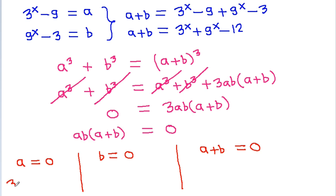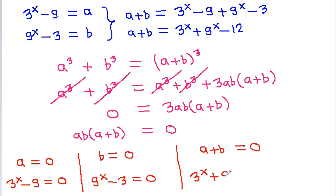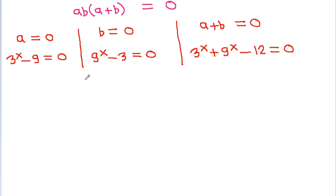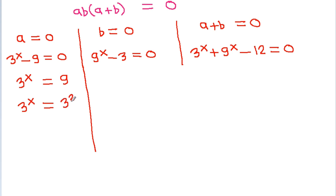And a is 3^x - 9, it is 0, so 3^x is equal to 9, which is 3 squared, so x will be equal to 2.